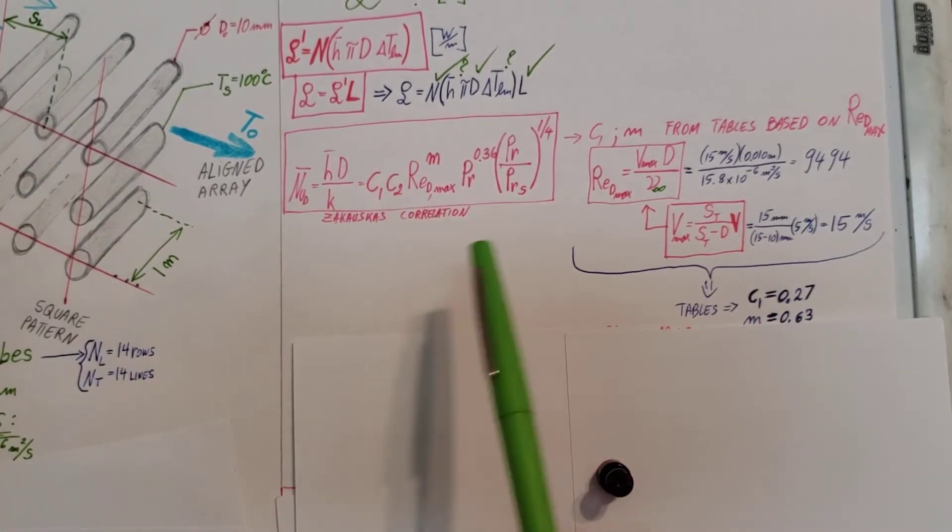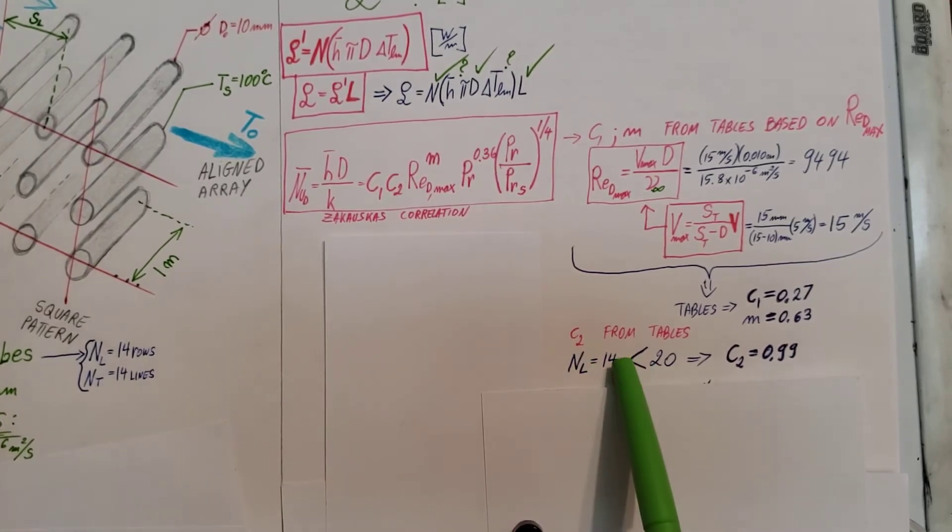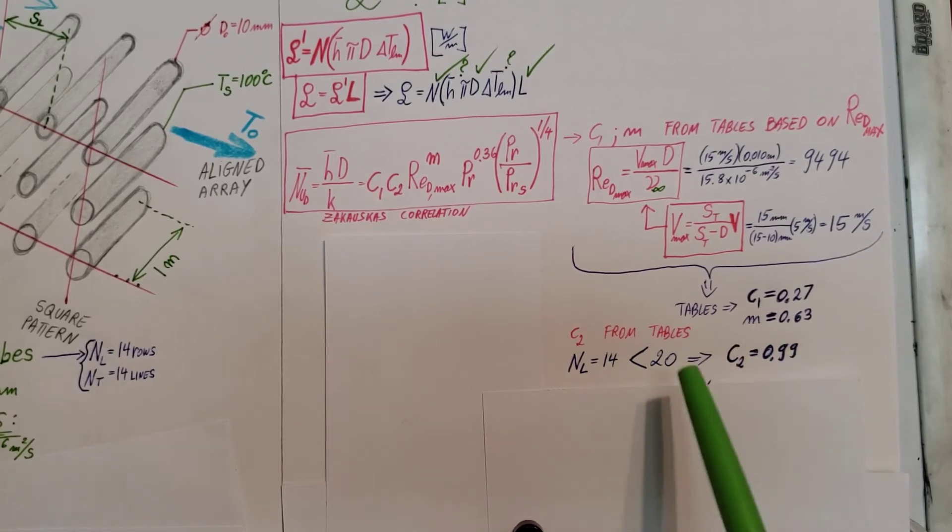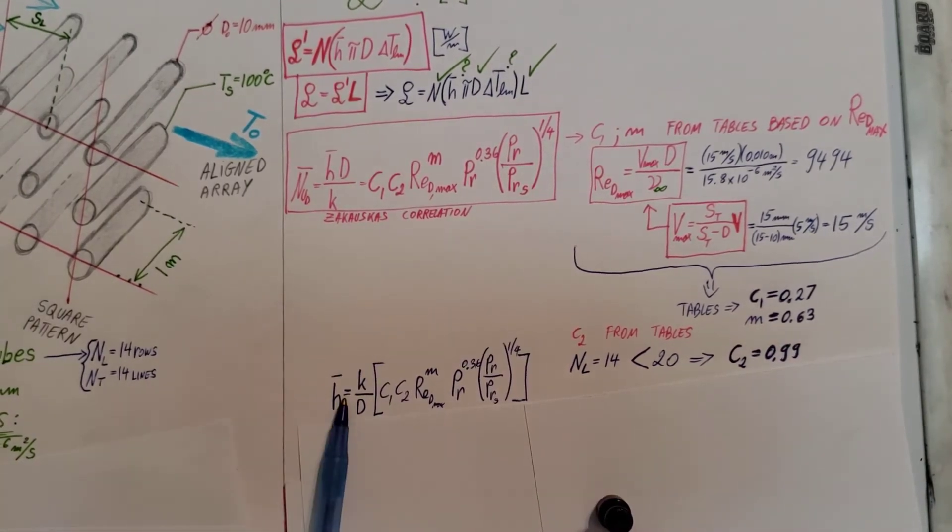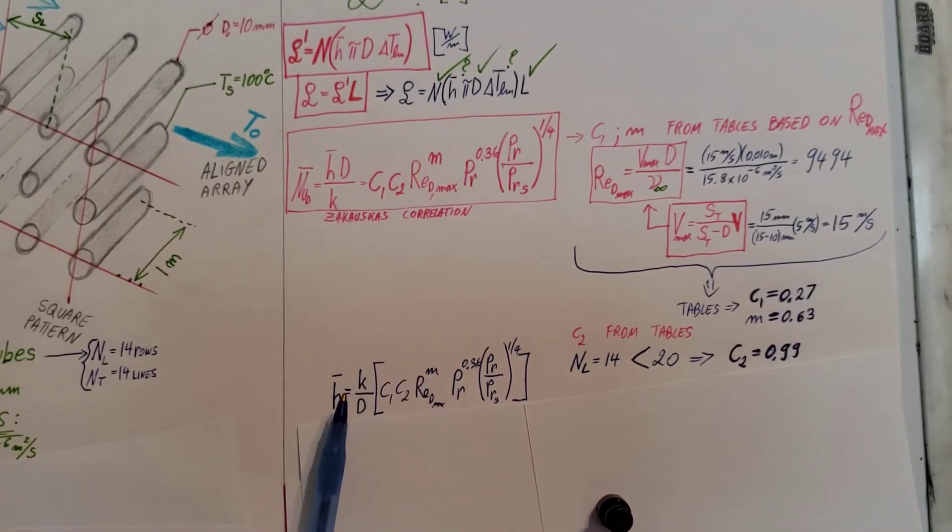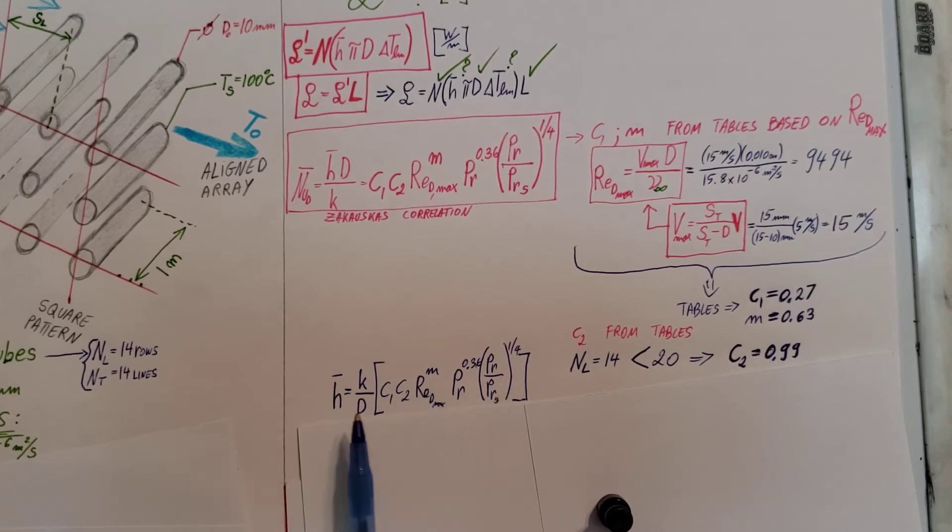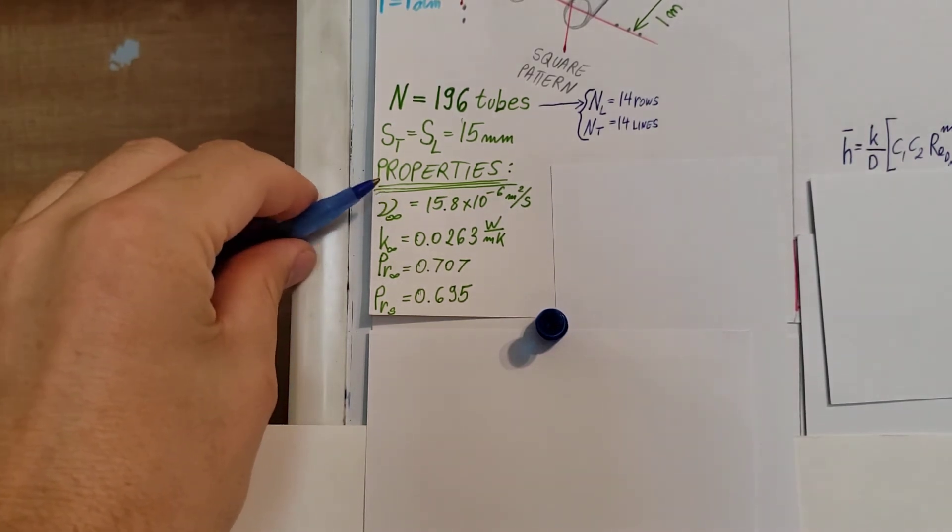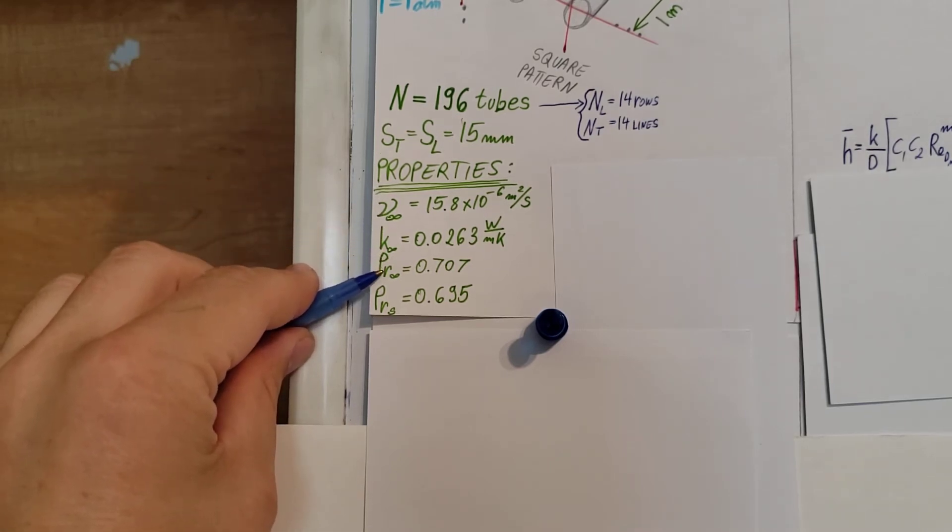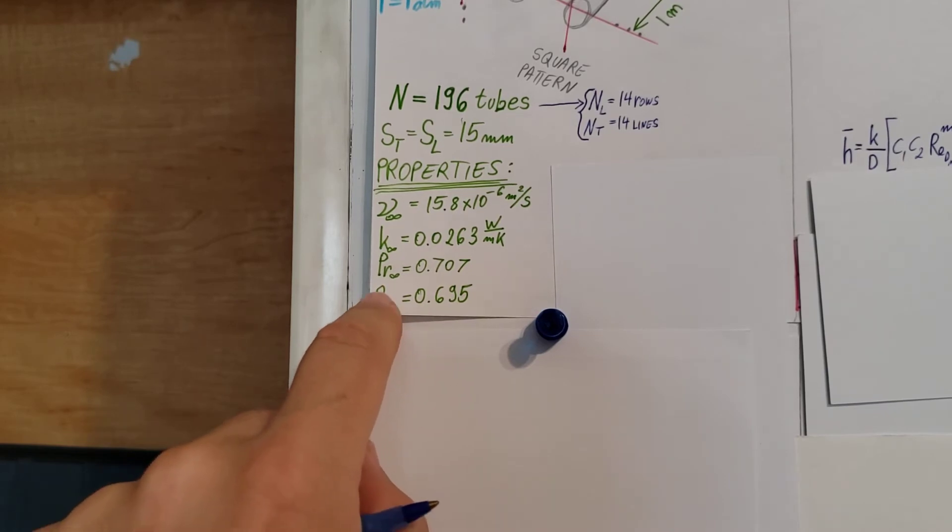We need to find C2. Same process - we're just going to go to a different table. C2 is dependent on NL. Since we have less than 20, we're going to have to find a coefficient for it. Above 20 will be just simply 1, but below it, it's going to have a value. For this one, we're going to estimate it from the table - 0.99. Now here I solve for H from this equation. We're going to use this part and this part. We're going to solve for H, and there you have it. Let's go find the properties that we still miss.